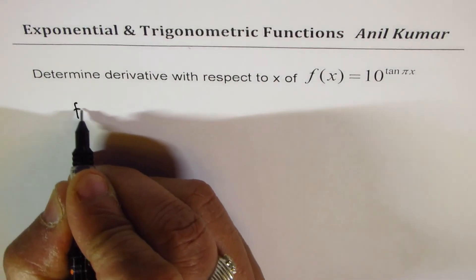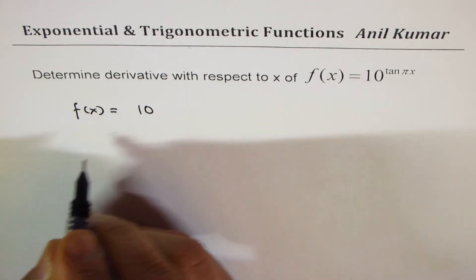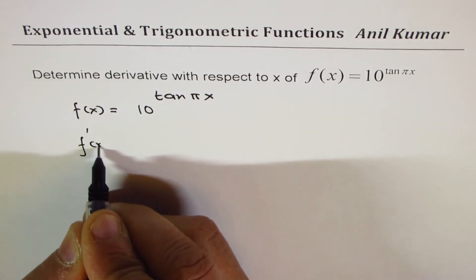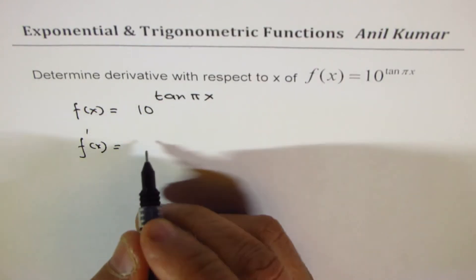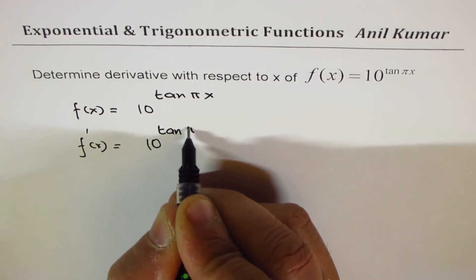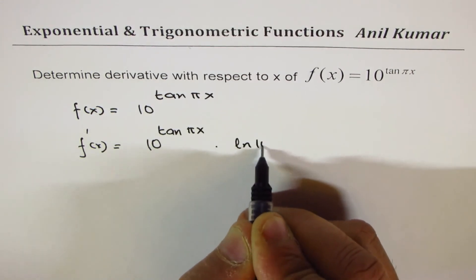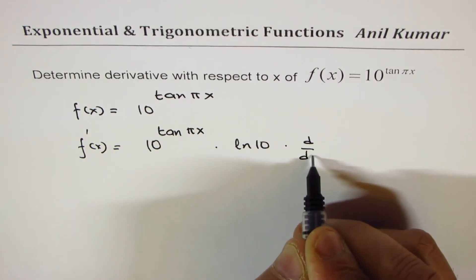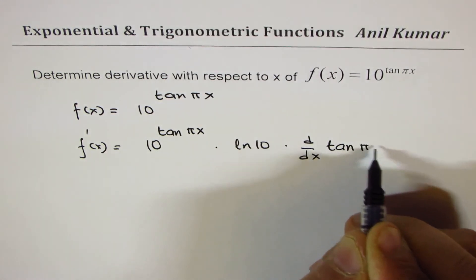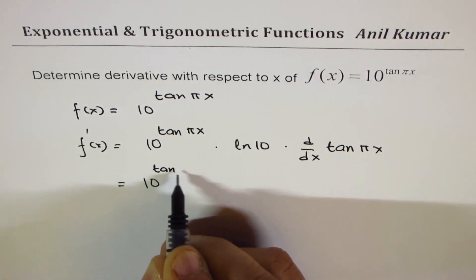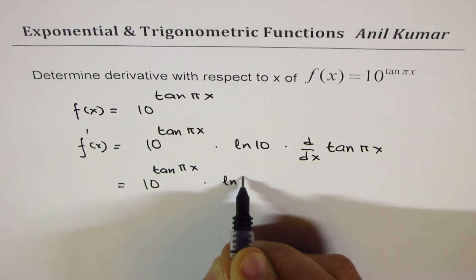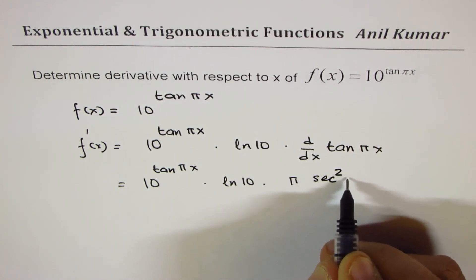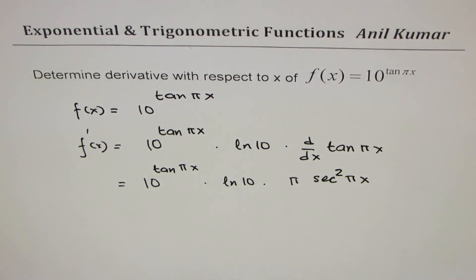Now we find the derivative of f(x) = 10^(tan(πx)). The derivative is 10^(tan(πx)) times ln(10) times the derivative of the exponent. The derivative of tan(πx) is π · sec²(πx). So f'(x) = 10^(tan(πx)) · ln(10) · π · sec²(πx). That is the solution for this one.